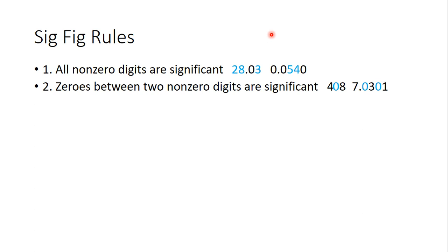That's where rule number two comes in. If you have a zero between two non-zero digits, they are significant. So this zero is between four and eight, significant. These zeros are between non-zero numbers, so they are significant.